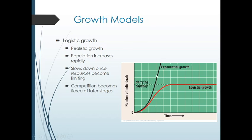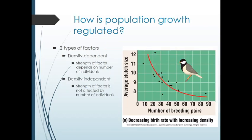This logistic growth idea is shown on a graph where the black line is exponential growth, but logistic growth shows that it slows. As the population grows and there get to be more individuals, certain resources become limiting, competition for those resources becomes very fierce, and the population flattens out and doesn't really grow anymore.